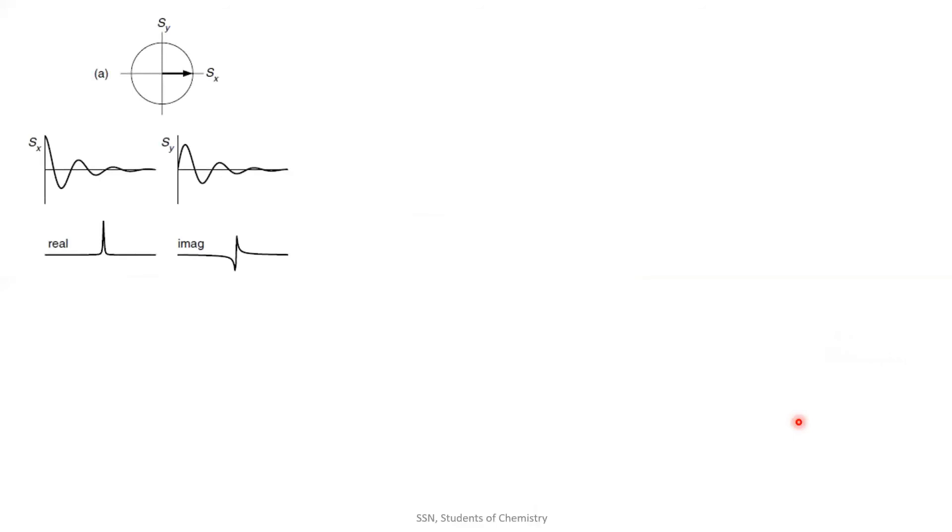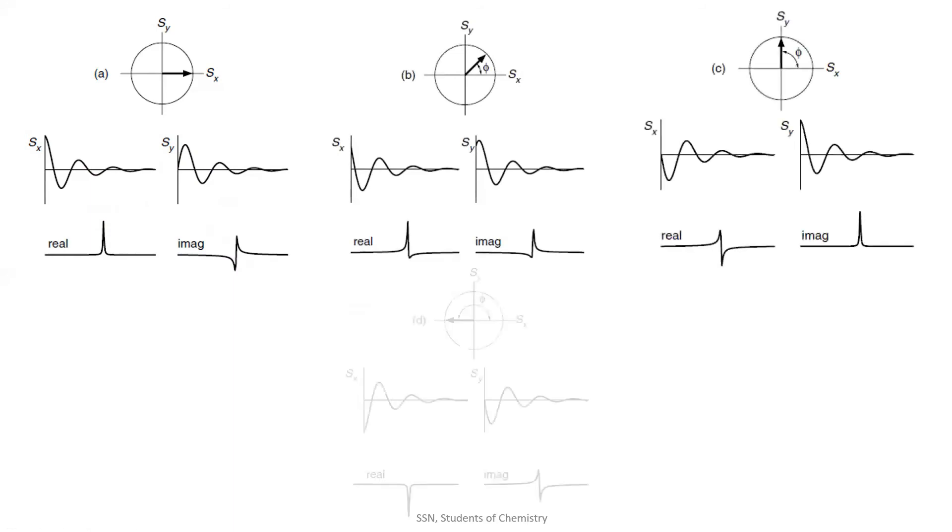The magnetization is present only in the x-axis. Signal S starts with some initial value, and signal Y starts with zero, and hence signal S has an absorption Laurentian and signal Y has a dispersion Laurentian. Likewise, when magnetization revolves around, we get different Laurentians.